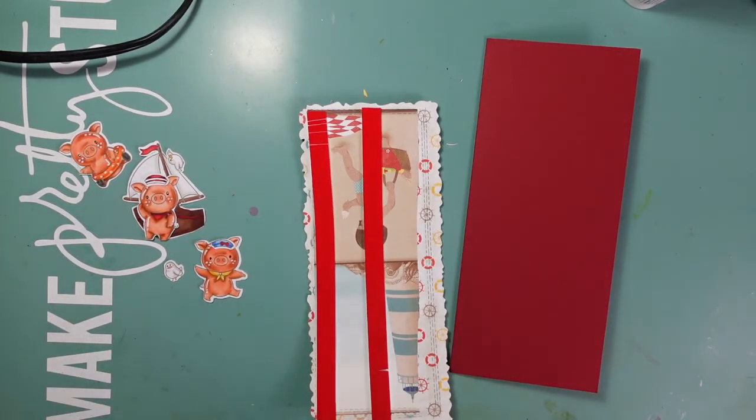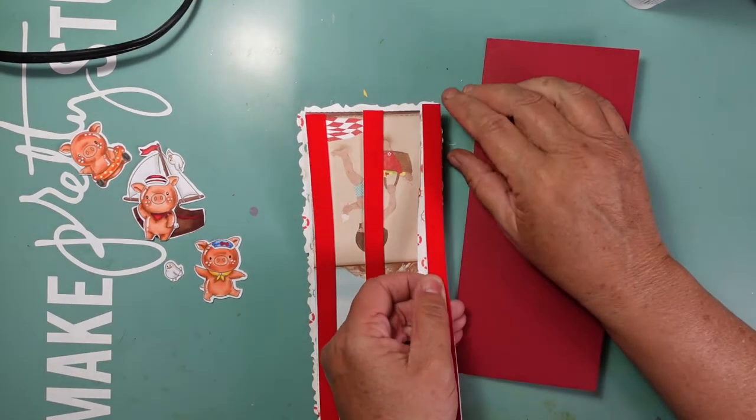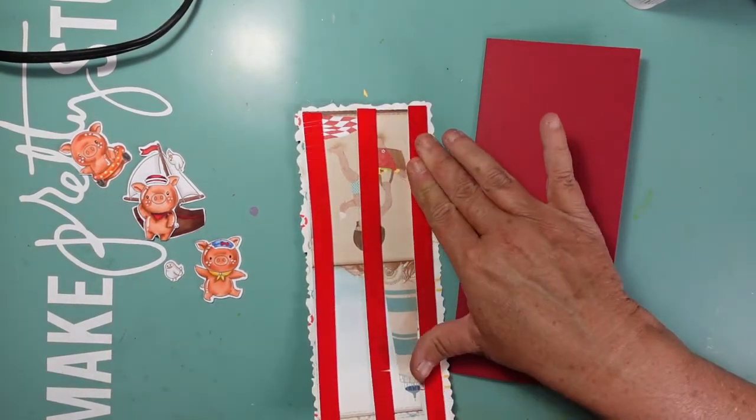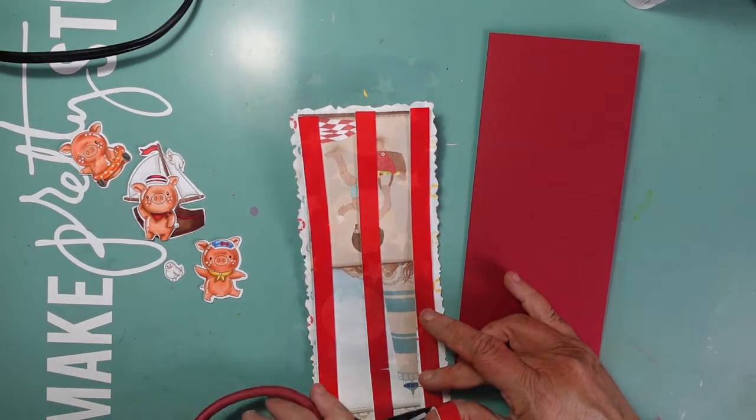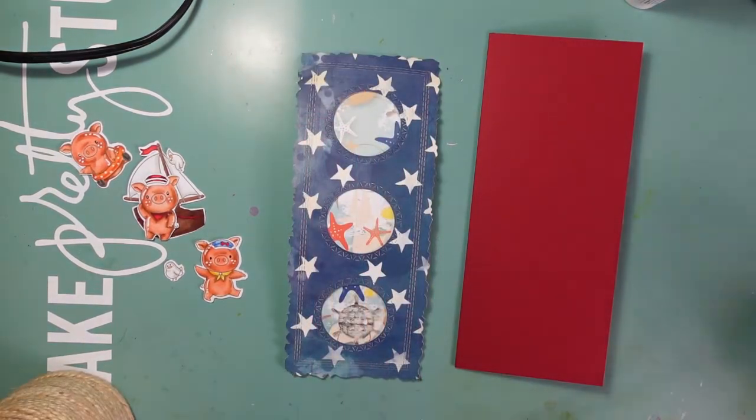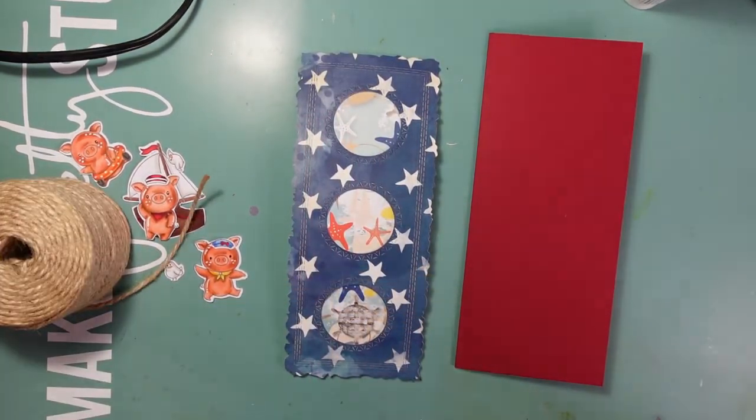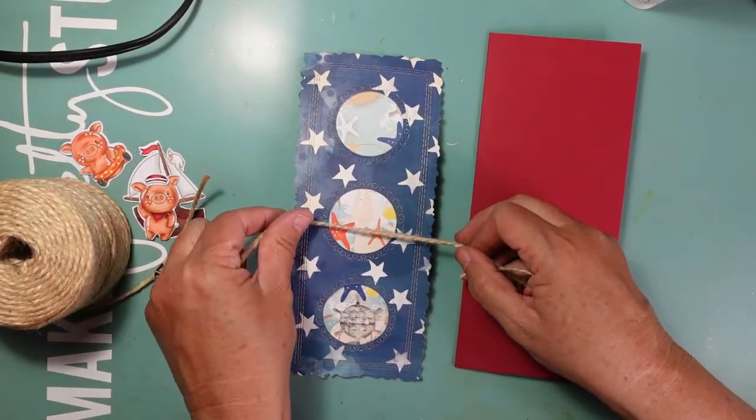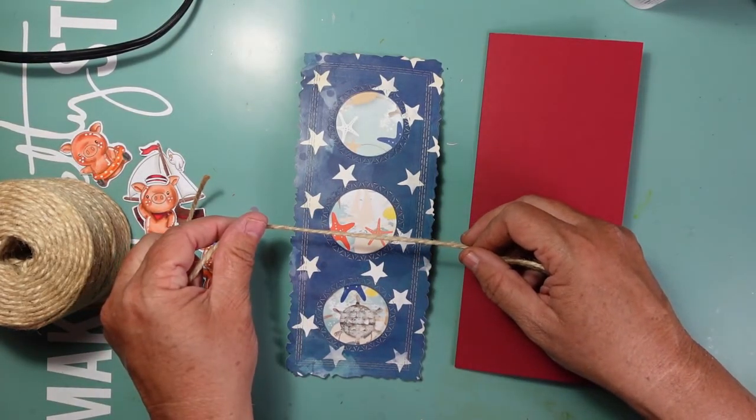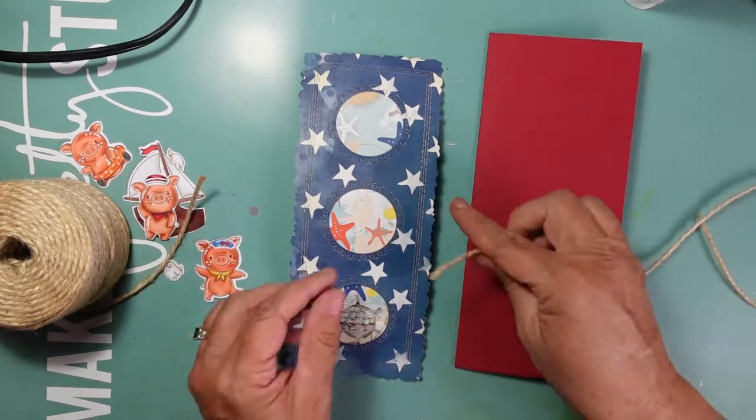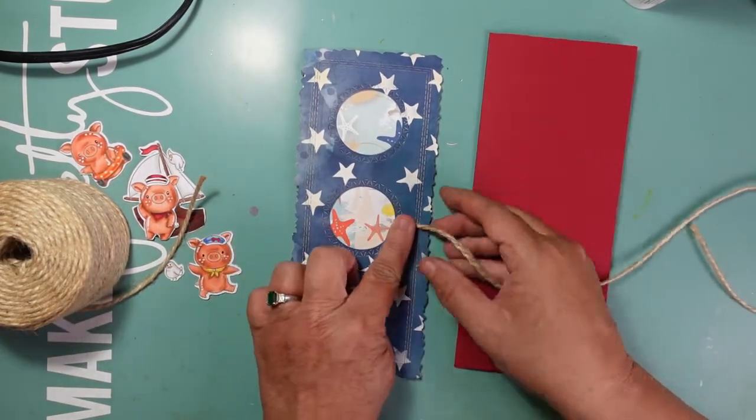And then I used this same coordinating paper. So this is an older paper pack from Bo Bunny—it was a 12 by 12 pack. I've probably had this for 10 years, and that's one of the things that I love about slimline dies and cards, is that I'm able to use some of that scrapbook paper that I may not necessarily use for scrapbooking anymore, but I can still use it to create my cards.